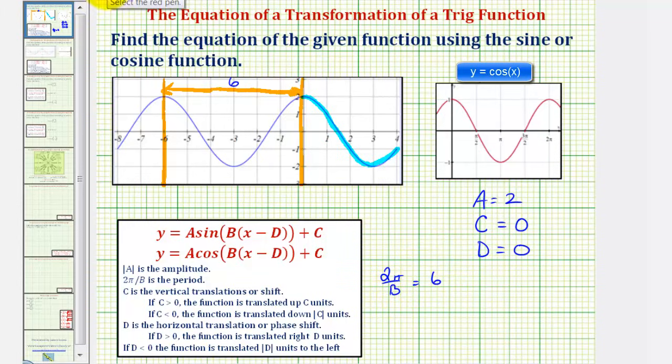To solve for b, let's begin by multiplying both sides by b. Notice how this gives us two pi equals six b. Dividing both sides by six, we have b equals two pi divided by six, which simplifies to pi over three. So now that we know a, c, d, and b,